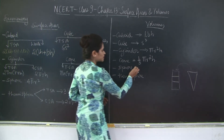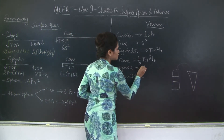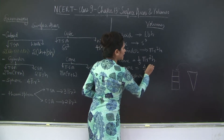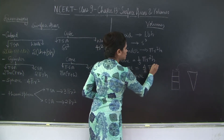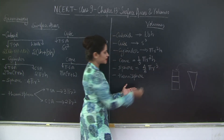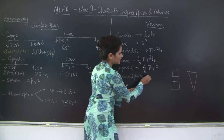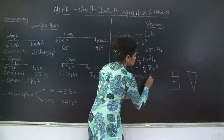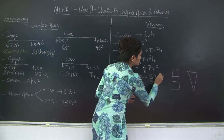The volume of a sphere is (4/3)πR³. A hemisphere is half of a sphere, so its volume is (2/3)πR³.